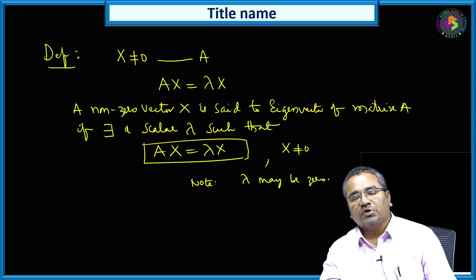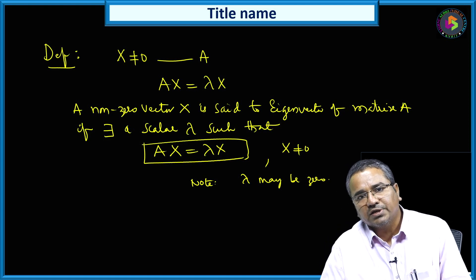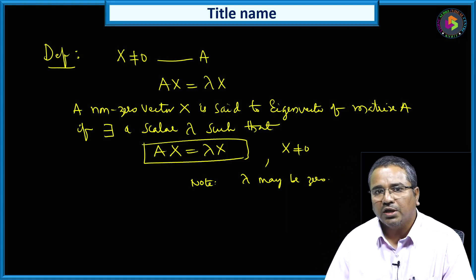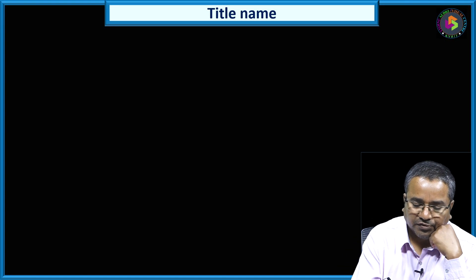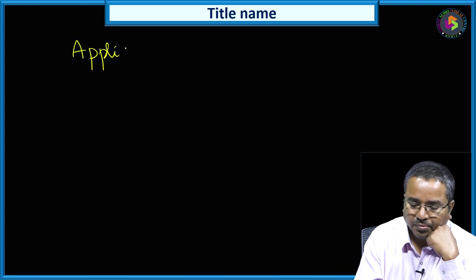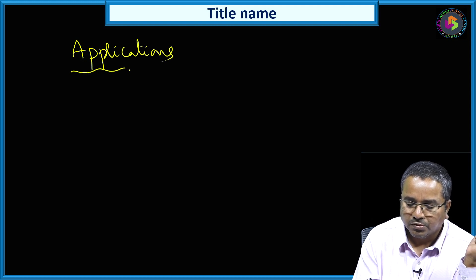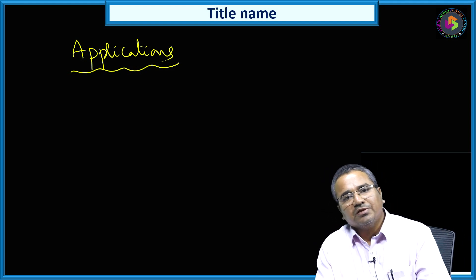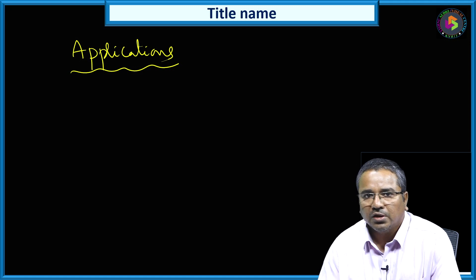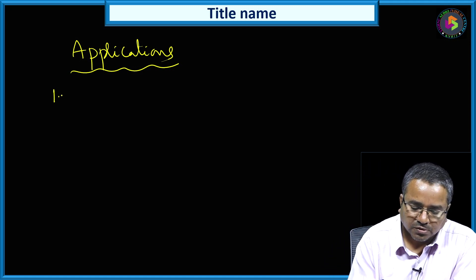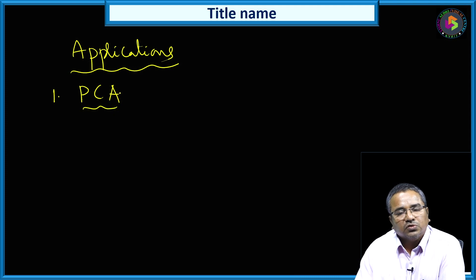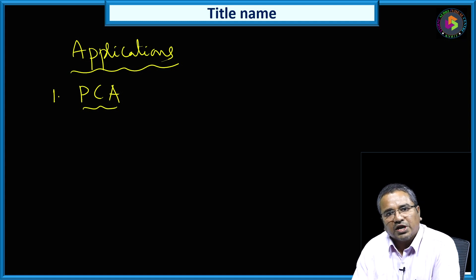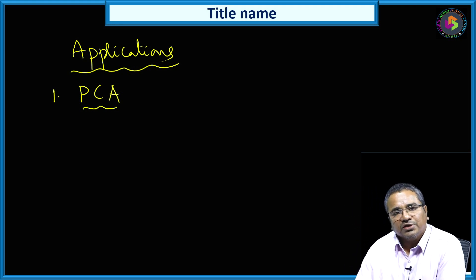The significance of eigenvalues and eigenvectors is that we are preserving the direction and just changing the magnitude. Now we will move to the second part of today's topic — some of the applications. Eigenvalues and eigenvectors have a wide range of applications. The first one is PCA — Principal Component Analysis — which is a powerful technique for the reduction of dimensionality. The concept of eigenvalues and eigenvectors is used to compress the data by reducing its dimensionality.